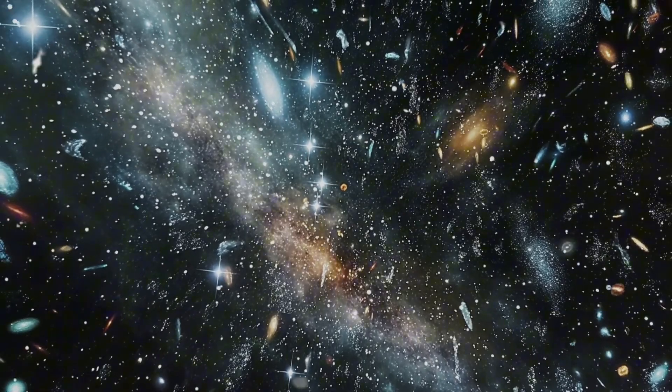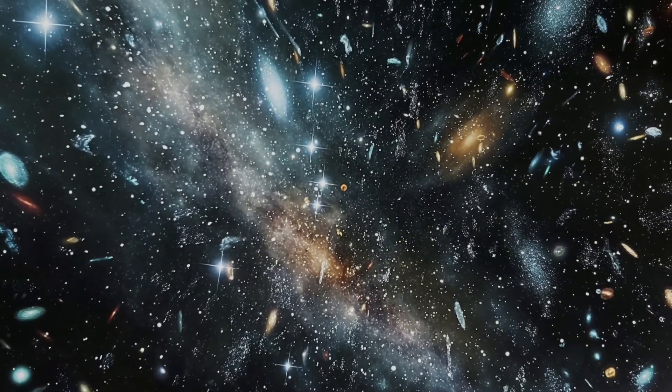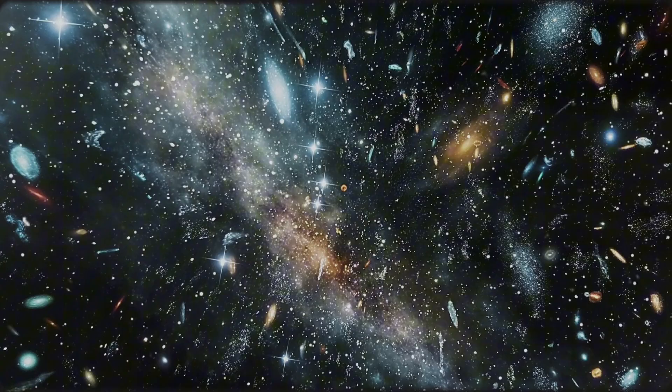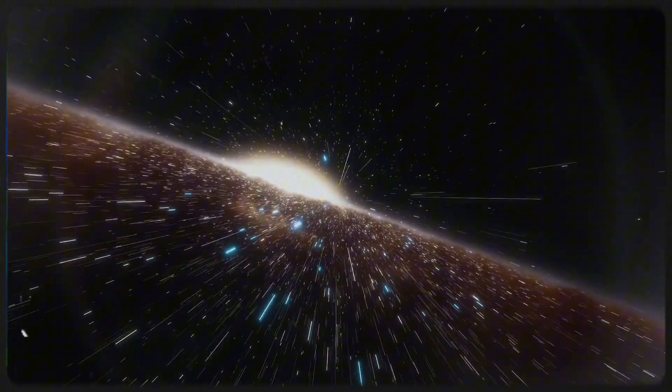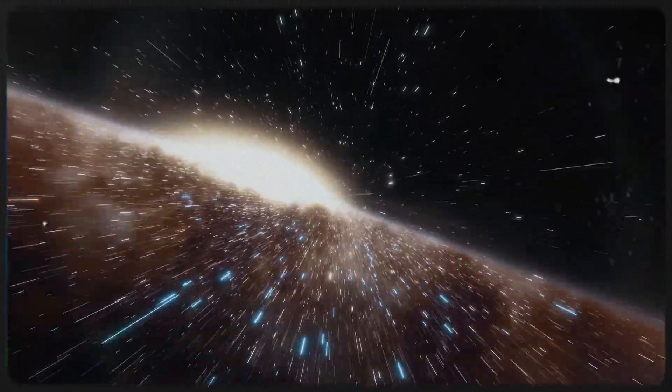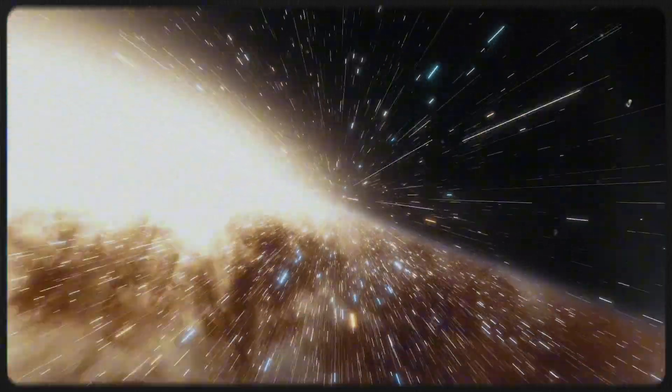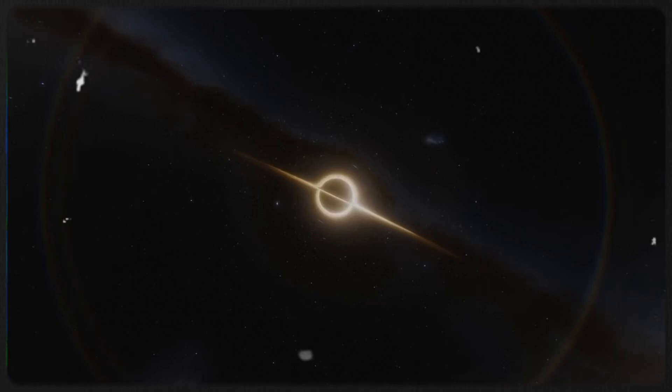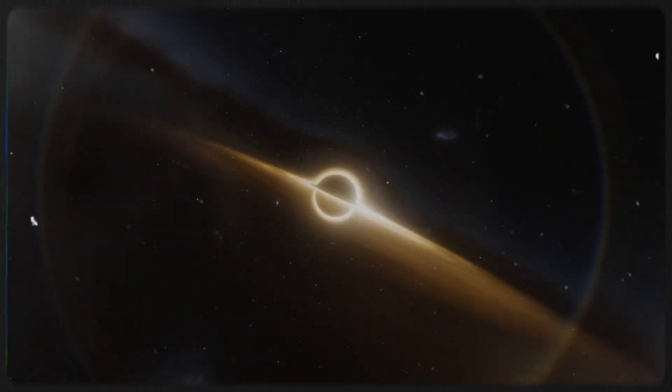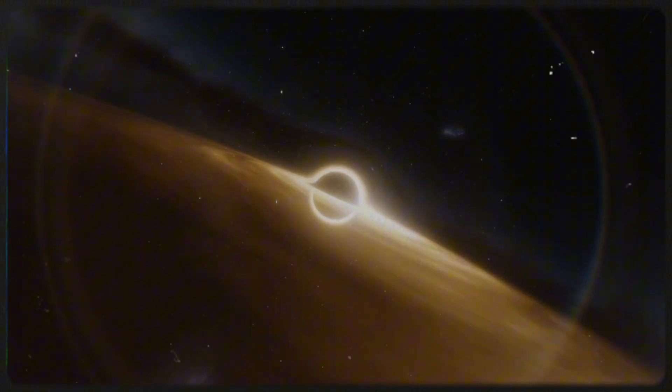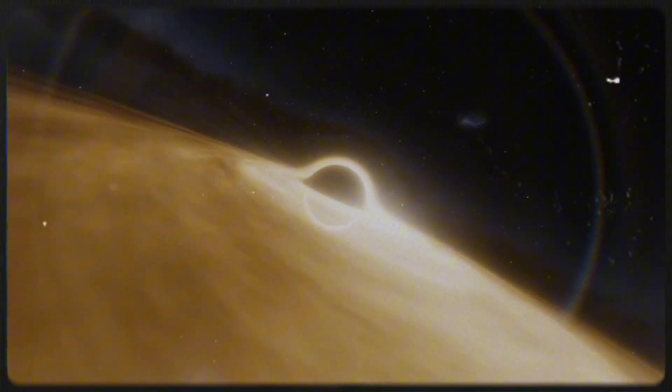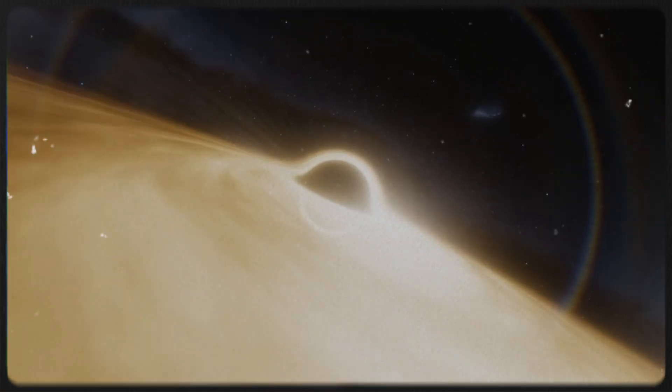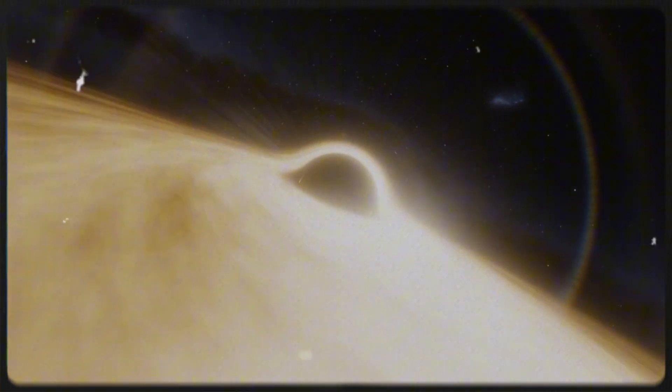The mechanisms behind the formation of these early black holes remain both intriguing and elusive. One leading theory points to direct collapse black holes, which emerge from the collapse of massive gas clouds without first forming stars. Another possibility involves hyper-efficient accretion, where smaller seed black holes rapidly consume surrounding material, allowing them to grow at astonishing rates. Regardless of the process, these discoveries challenge and expand current astrophysical models.